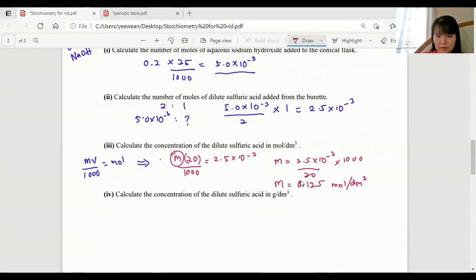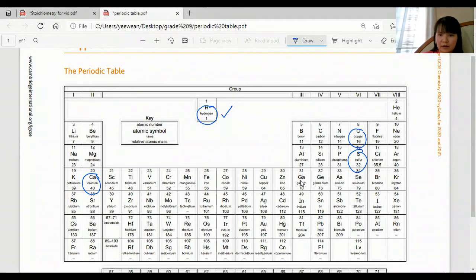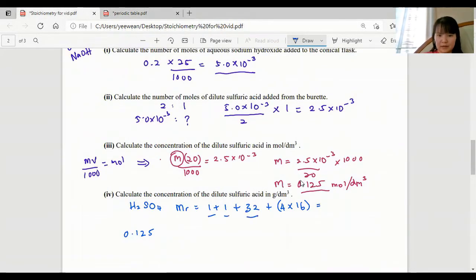Now calculate the concentration of the dilute sulfuric acid. Since we have the mole and the volume, we can use MV per thousand equals the number of moles. So my answer here is 0.125 mole per dm cube. Now they want us to convert that to gram per dm cube. What I'm doing here is just converting moles to grams. dm cube is still there, so ignore the per dm cube, just convert moles to mass. H, S, and O, I got 98 as the MR. Multiply by the mole per dm cube to get gram per dm cube. That's my answer.